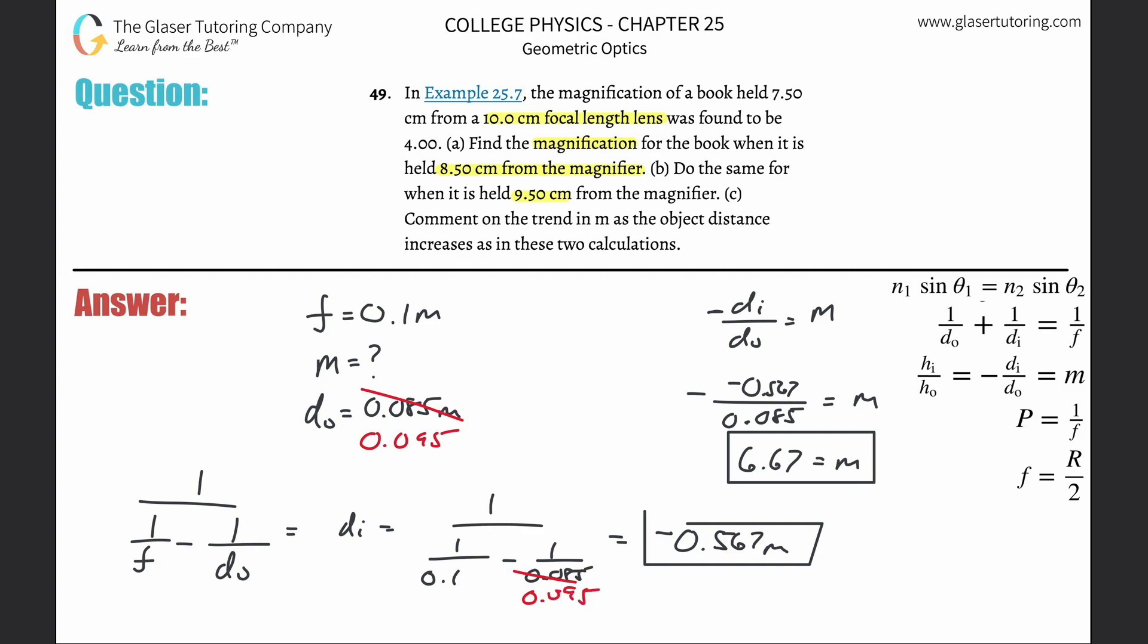I'm going to do the calculation again. So it's 1 divided by 0.1 minus 1 divided by 0.095, then 1 divided by that value. This is now negative 1.9 meters. Take that and plug it in here, negative 1.9.